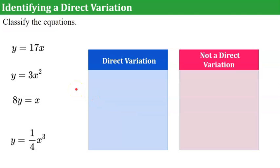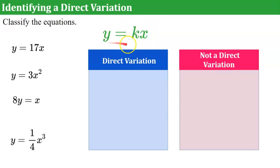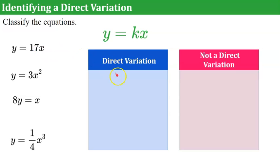Let's look at identifying a direct variation, which is the equation of a line representing a proportional relationship. We have Y equals 17X. A direct variation must be written in the form Y equals a number times X. When I look at this, it's Y equals 17 times X — that is a direct variation because it's in that form Y equals K times X. Our constant of proportionality here would be 17, so we put that in the direct variation category.